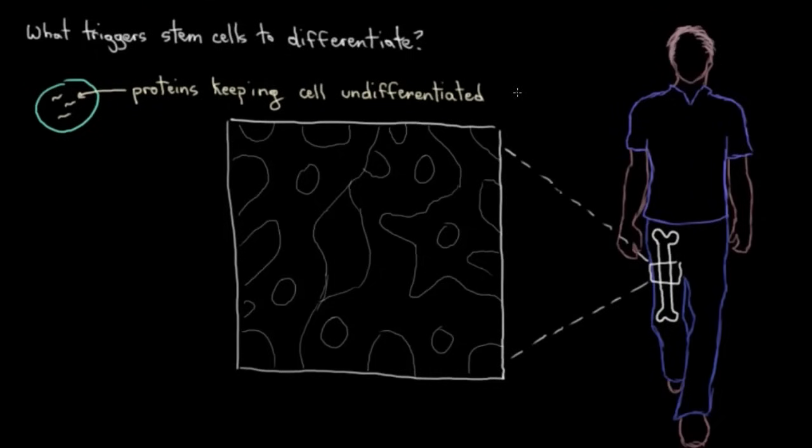But, when put in certain environments, this regulation can be overridden, and then they can go on and differentiate into a more specialized cell, the type of which depends on what specific little chemical signals are hanging around in the stem cell's environment. So, for example, in the bone marrow, there's certain proteins that hang around stem cells and induce them to differentiate into the specific blood cell types.